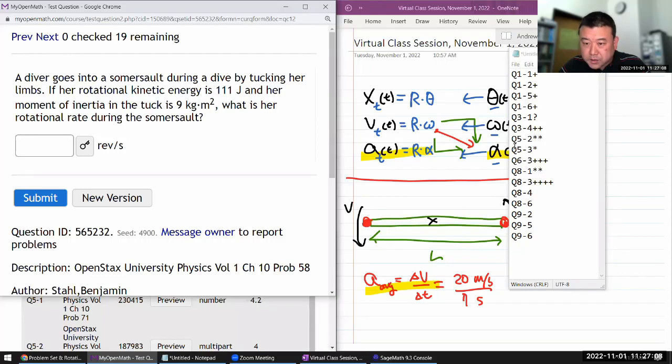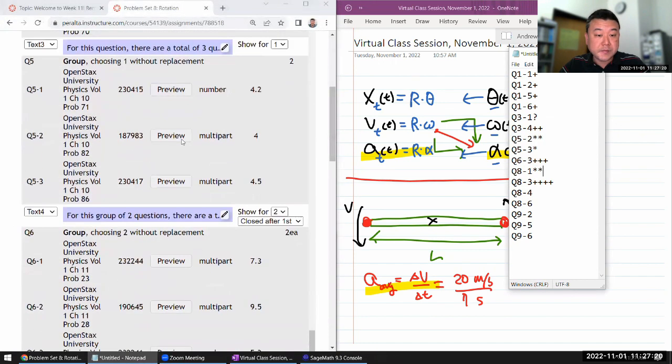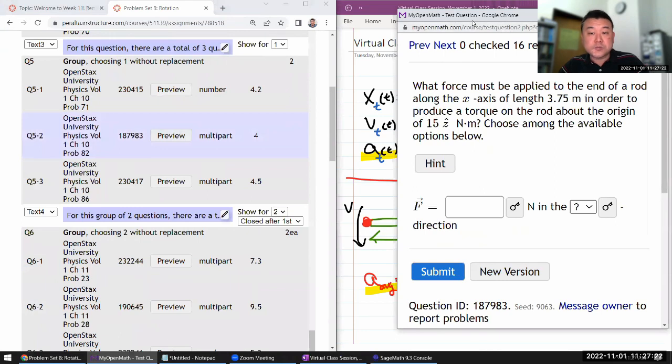One set of questions I want you to do are the questions that involve cross-products. So let me do those. That's question 5-2 and question 8-1. Those two questions both involve cross-product.